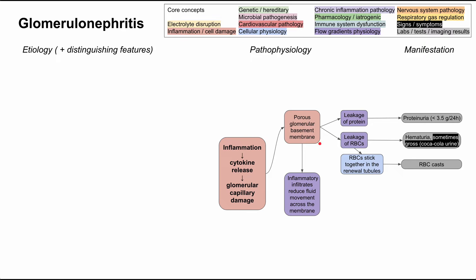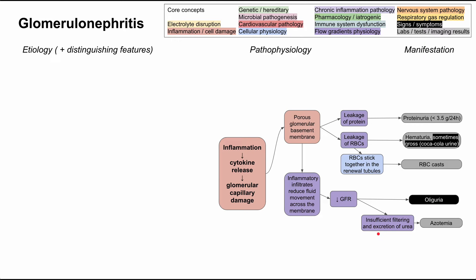Inflammation in the glomerular basement membrane causes inflammatory infiltrates that reduce fluid movement across the membrane, resulting in a decreased GFR. It's counterintuitive, but the membrane can be porous and still have a decreased GFR simultaneously. This leads to oliguria — decreased urine output — and azotemia, where nitrogenous compounds build up in the blood, reflected as a high BUN on lab values.